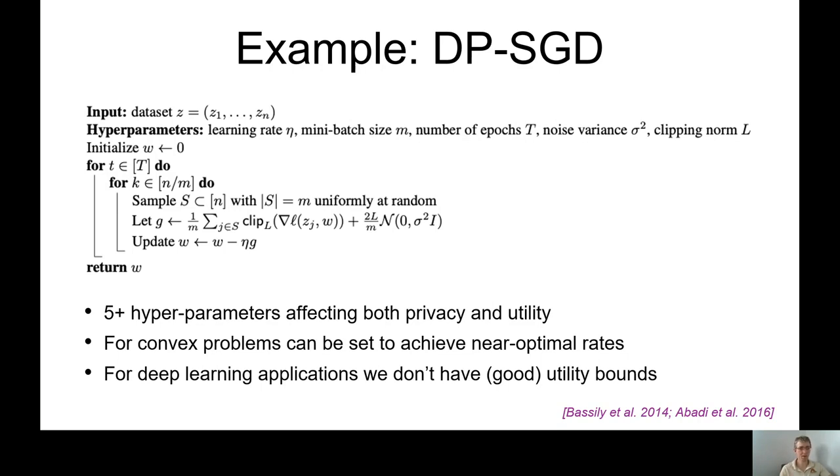Now the problem comes when you try to privatize this algorithm. For that we may clip the gradients, we add Gaussian noise and so on, and in the end we end up with five hyperparameters that affect privacy or utility of stochastic gradient descent. And we don't have good utility bounds for such non-convex problems, meaning we have no good way of choosing these hyperparameters.